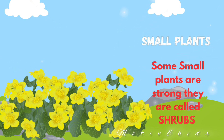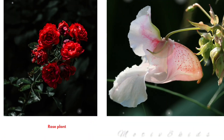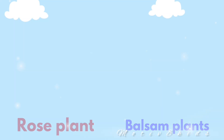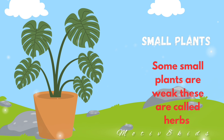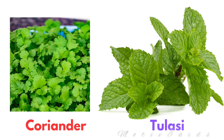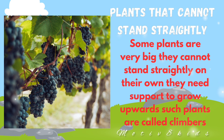Now, some small plants are weak — these are called herbs. Examples of herbs are coriander and tulsi. Some plants cannot stand straight on their own. They need support to grow upwards — such plants are called climbers.